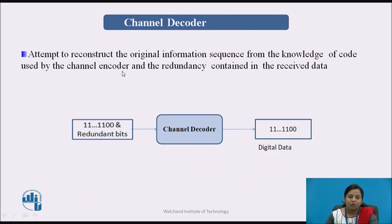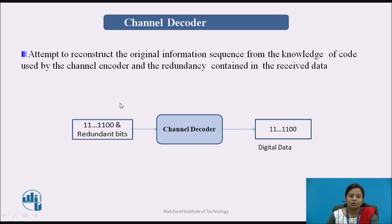The next block is the channel decoder. It attempts to reconstruct the original information signal using knowledge of the code used by the channel encoder and the redundancy contained in the received data. The channel decoder removes the extra redundant bits that were added at the channel encoder.